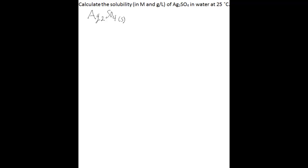We'll calculate solubility according to both of those units for this problem. The problem is asking you to calculate the solubility in both units of molarity and grams per liter of silver sulfate in water at 25 degrees Celsius. The first thing you want to do is write the balanced solubility equilibrium equation showing what will happen when you dissolve silver sulfate in water.